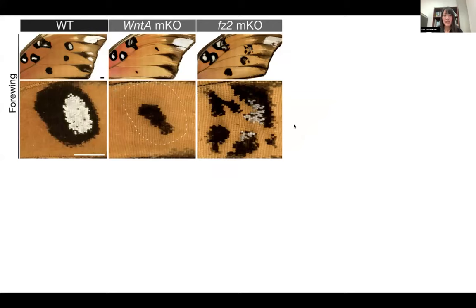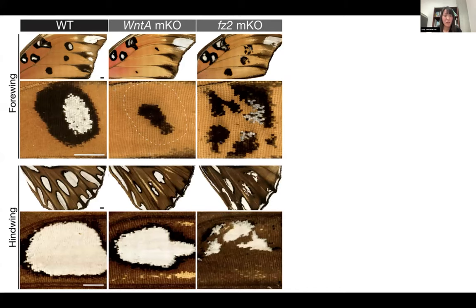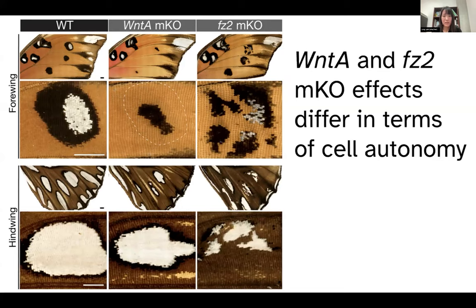Looking at less complete mosaic knockouts of WNT-A and Fz2 independently, we see different effects: WNT-A knockout clones have more rounded edges, whereas Fz2 knockouts have really jagged edges. This suggests Fz2 is acting in a cell-autonomous manner, while WNT-A acts cell non-autonomously as a ligand acting at a distance of possibly more than 5 to 10 cells. Fz2 receptors are bound to the membrane and act in a cell-autonomous manner. We see the same pattern in the hindwing.